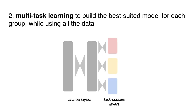The learned cohorts can be used in a multitask learning framework, where each task is defined by cohort membership. This allows the model to use all the data when relevant, but still learn a distinct model for each task. We implement the multitask model using a neural network with shared layers, followed by task-specific layers. In other words, the function mapping a patient to an outcome consists of both shared parameters and task-specific parameters.